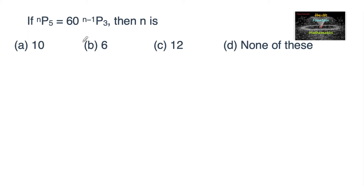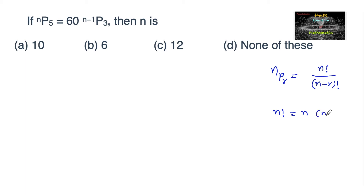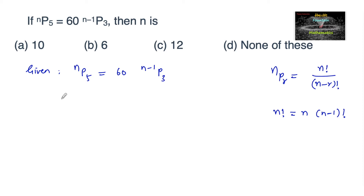If nP5 is equal to 60 times (n-1)P3, then n is? Since we know that nPr is equal to n factorial upon n minus r factorial, and n factorial can be written as n into n minus 1 factorial. So given nP5 is equal to 60 times (n-1)P3, we apply the formula nPr.